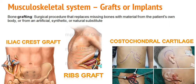Basically, what is a graft? A graft means the physician will excise a healthy site and place it to the defected area. Grafting are mainly of two types: autograft, allograft, and xenograft.